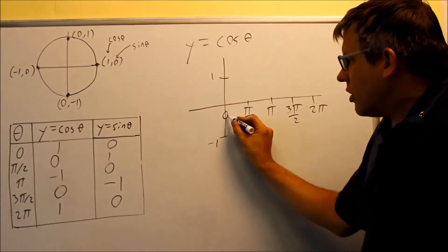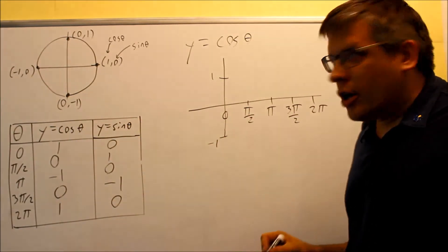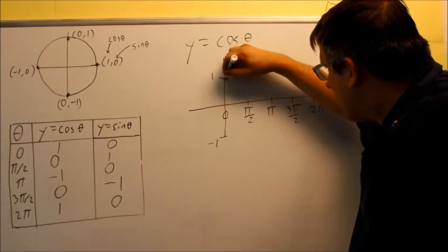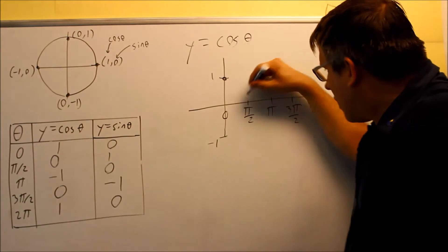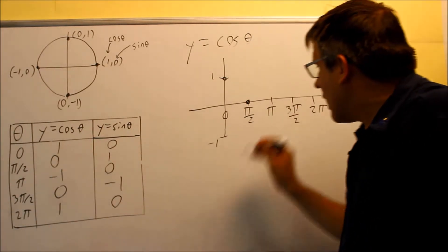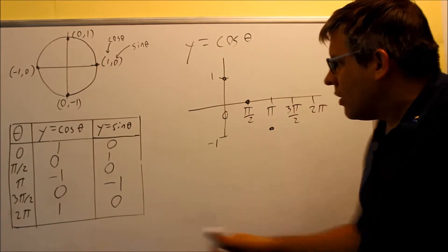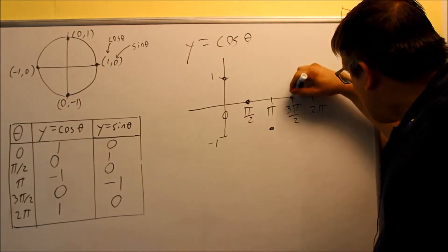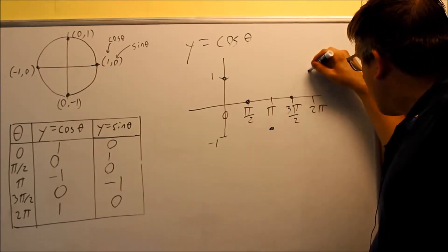So when I am at zero degrees, I get one. I'm using this column right now. So zero, one would be right here. Then at pi over two, it goes down to zero. At pi, I'm at negative one. So here's pi on the graph, negative one. Three pi over two, zero. And then two pi, I go back up here to one.